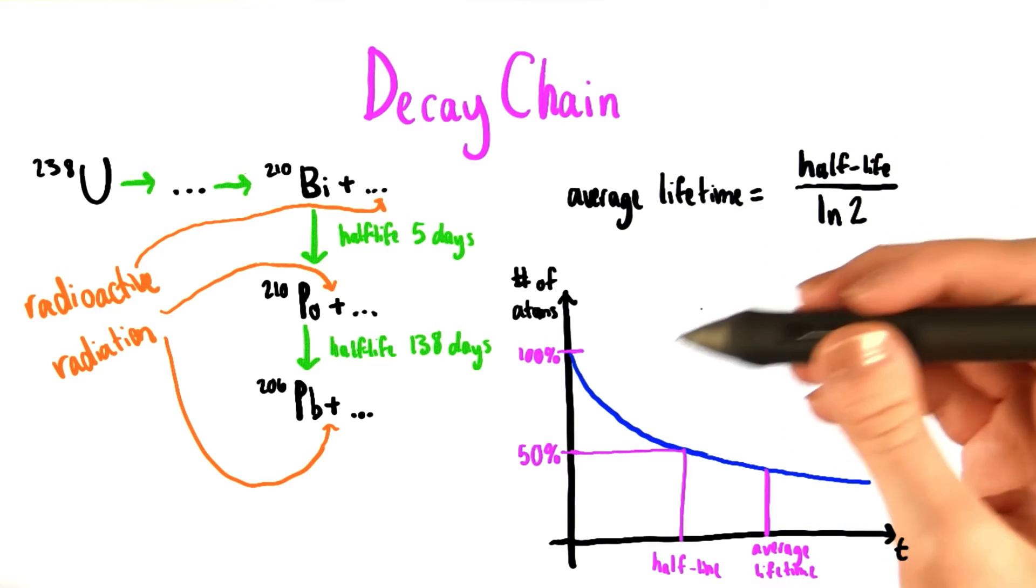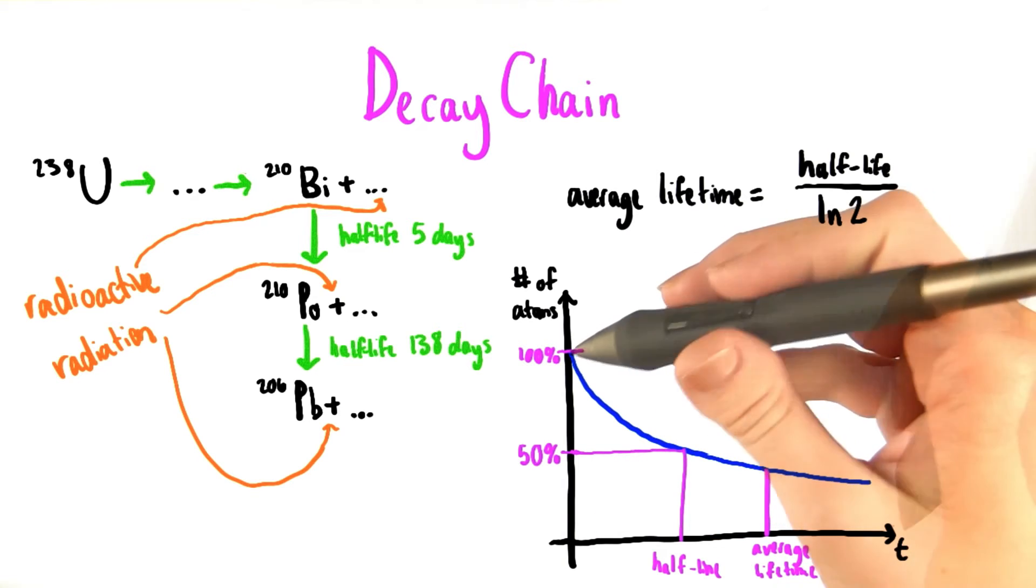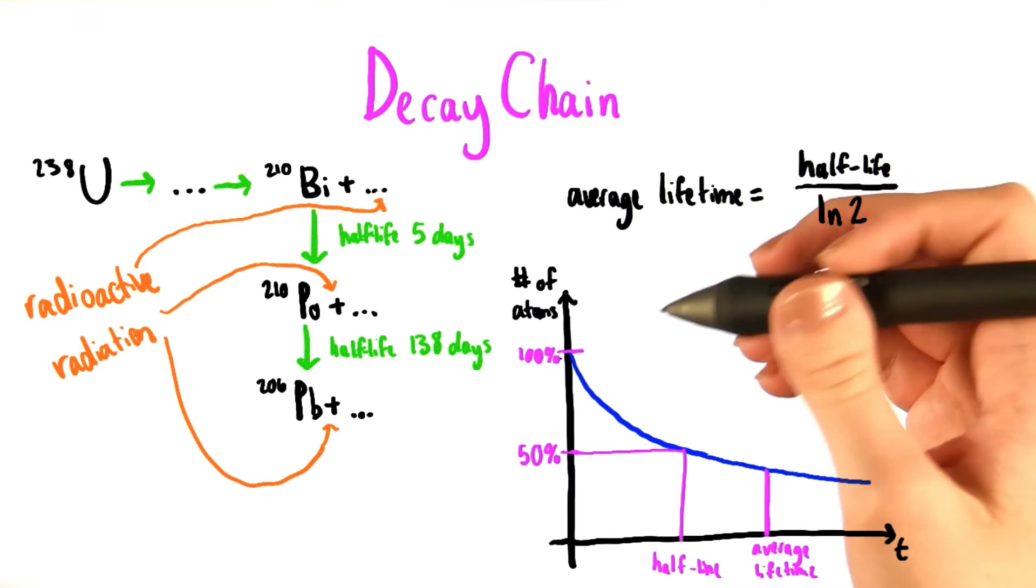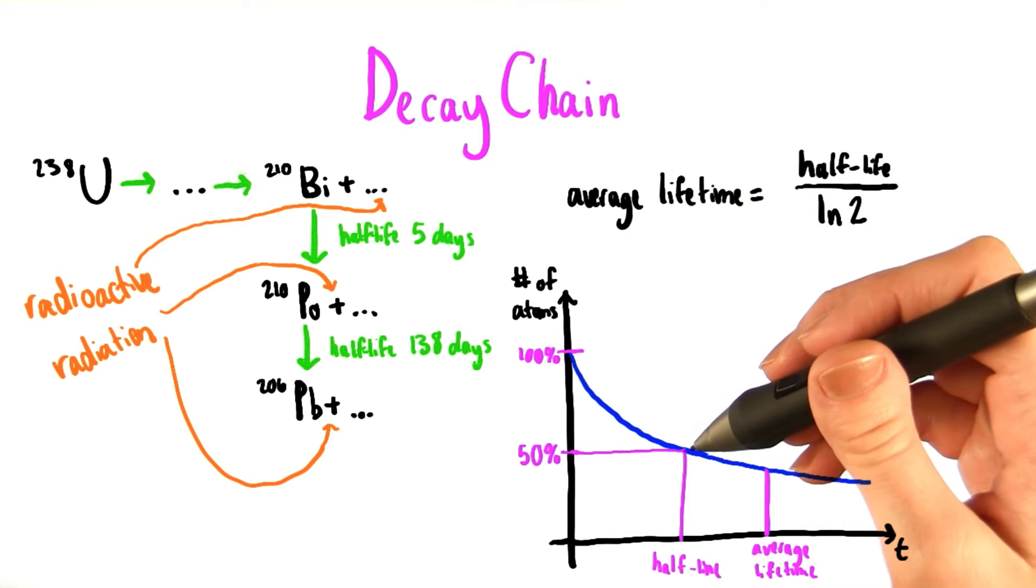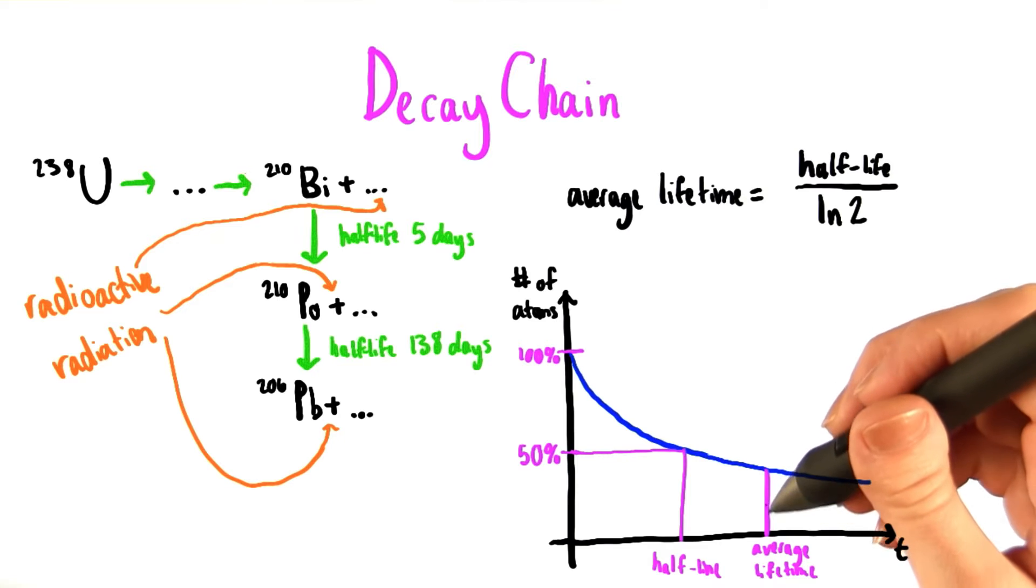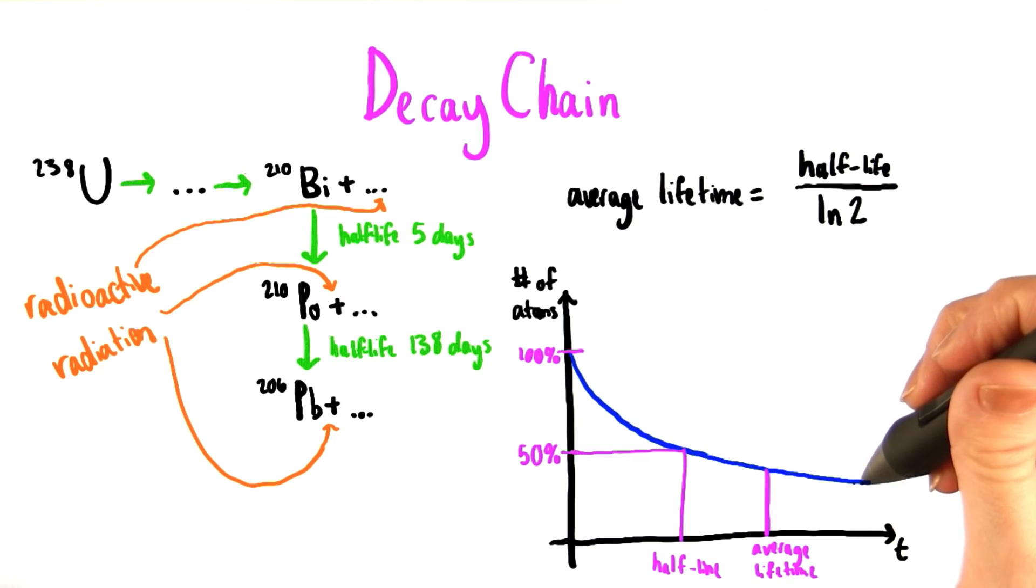It will be useful for us to think about how the number of atoms in a given sample changes over time. If we think of the initial amount of atoms as equaling 100% of that amount, then when t equals the half-life, we have half of those atoms left. Over here, when we see the average lifetime marked out, of course there are still some atoms left, but many of them have already decayed.